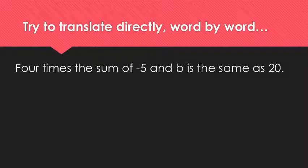As you're paying attention to every word, you might want to translate the phrase word for word as you read it, instead of doing it all at once. If I look at this sentence, four times the sum of negative five and b is the same as 20. That may be a lot of information to try to process and write down all at once. But if I take it piece by piece, it could make it a lot easier.